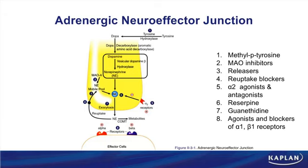Now that we've formed norepinephrine, it will sit in the vesicle until it's time to be released. The signal to release norepinephrine: the membrane depolarizes, calcium channels open up, calcium rushes into the nerve, the vesicles fuse with the membrane, and norepinephrine gets released into the synapse.